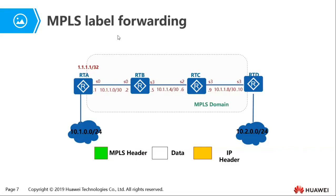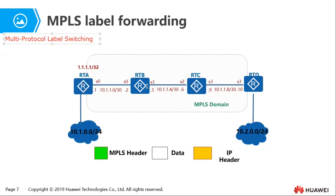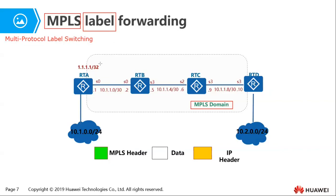We know that routers forward data based on the IP address. But in an MPLS domain, we want routers to forward data not based on the IP header, but based on an MPLS header which uses labels — just like layer two switches forward data based on MAC address and port number. Initially this was done to improve forwarding efficiency, but due to the improved processing power of modern routers, that is no longer the only advantage.